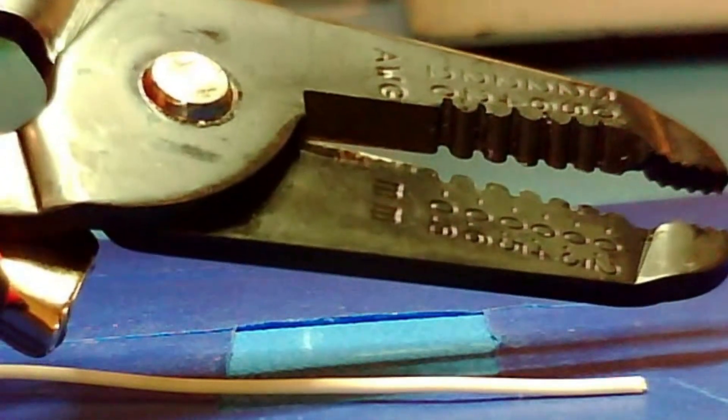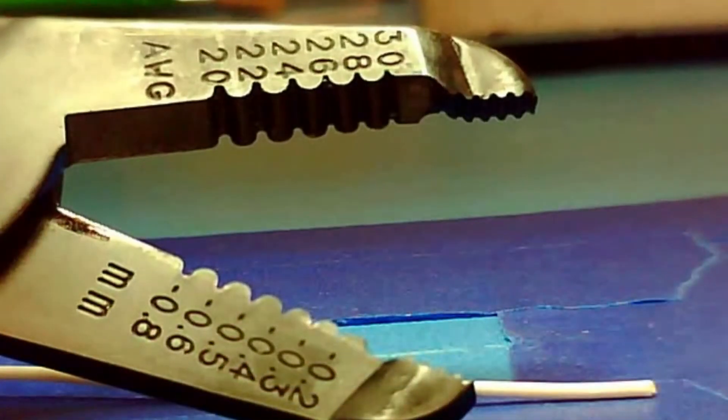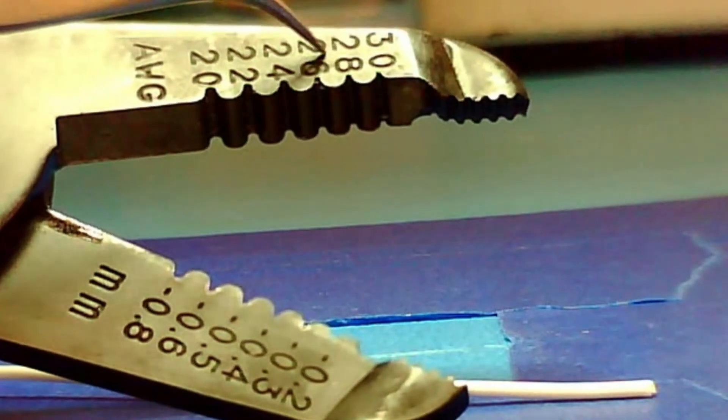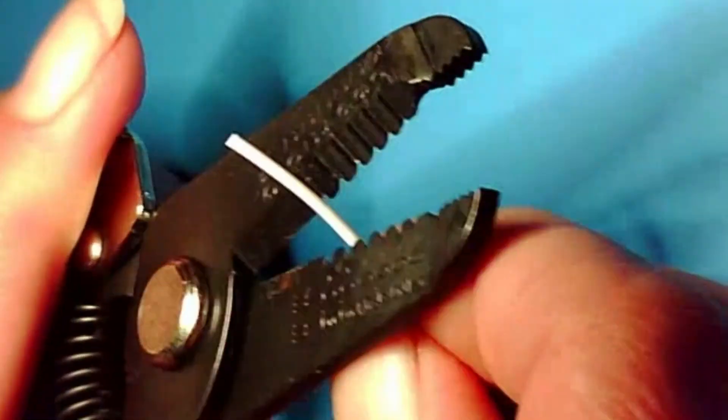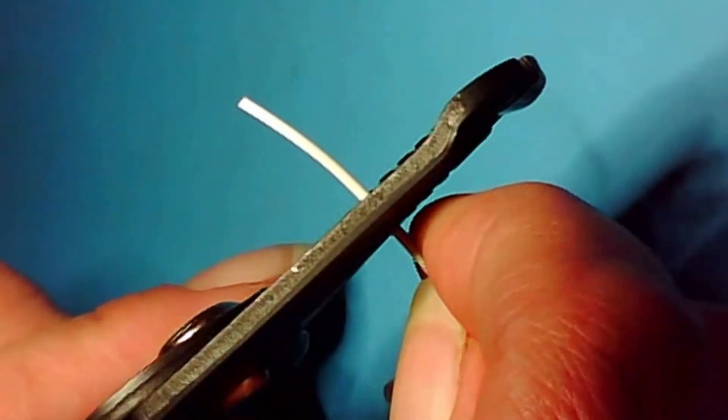This wire stripper has the American Wire Gauge or AWG sizing along one side of the jaw and wire size in millimeters on the other side. Select the appropriately sized hole and place the wire between the blades.